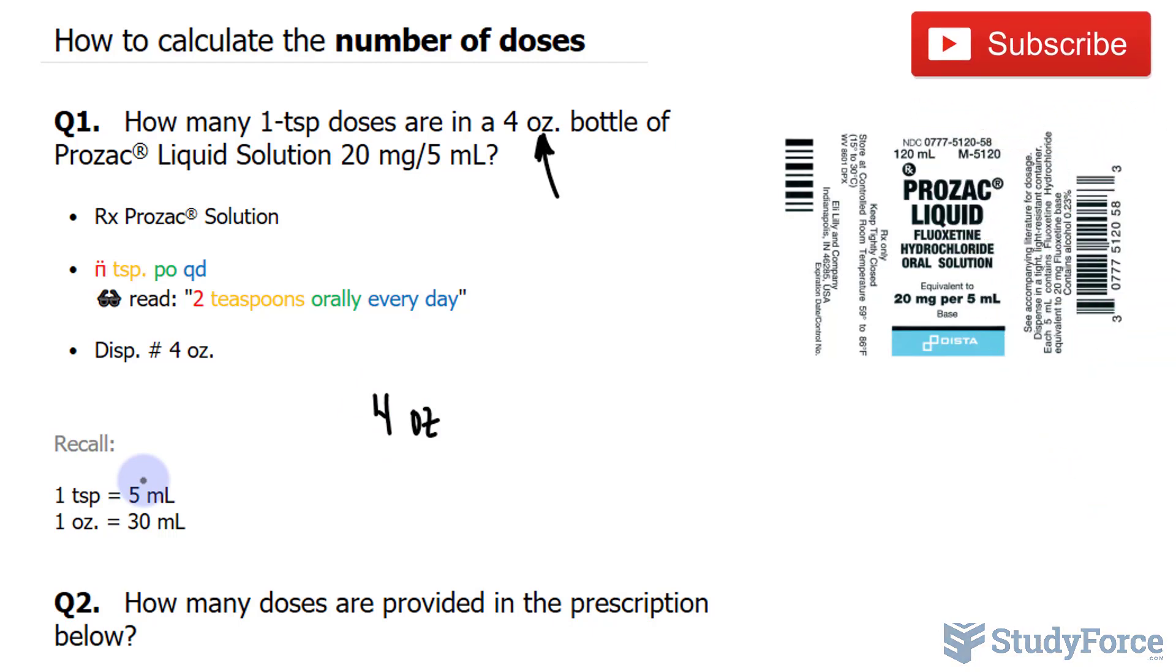So I can multiply four ounces by 30 milliliters per one ounce. I'm using this conversion ratio. And what this will do is cancel out the ounce unit, leaving us with milliliters. But of course, we want teaspoons.